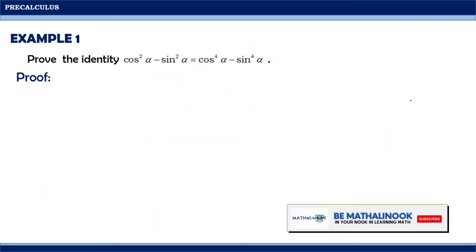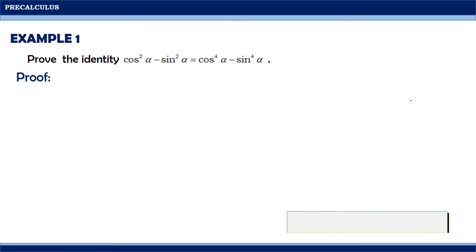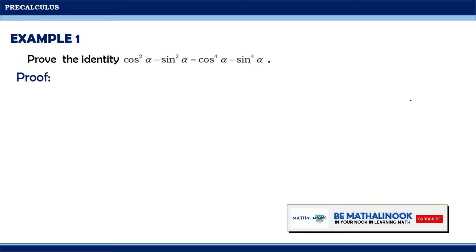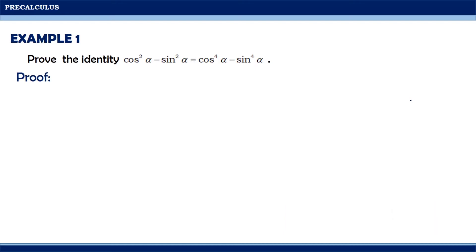Let us try this example. Prove the identity: cosine squared alpha minus sine squared alpha equals cosine to the 4th alpha minus sine to the 4th alpha. Looking at both sides of the equation, notice that the right side is more complicated than the left side. Hence, let us manipulate the right side and show that it equals the left side. Let us rewrite the given: cosine squared alpha minus sine squared alpha equals cosine to the 4th alpha minus sine to the 4th alpha.